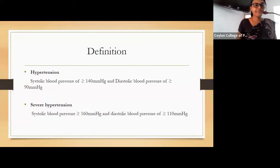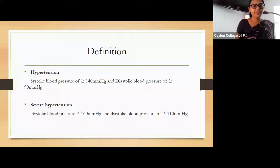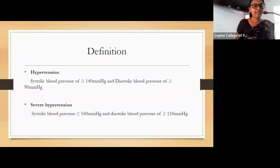The definition of hypertension in pregnancy is systolic blood pressure of more than or equal to 140 and diastolic blood pressure of more than or equal to 90 mmHg. Severe hypertension is defined as systolic blood pressure more than or equal to 160 and diastolic blood pressure more than or equal to 110.